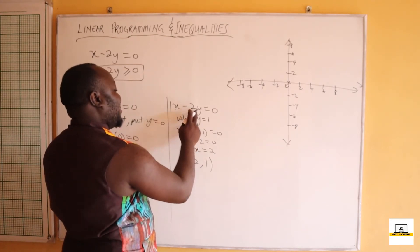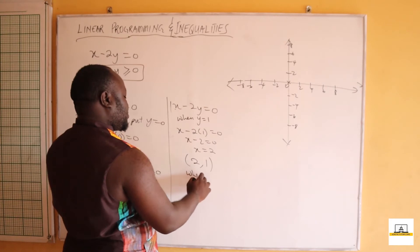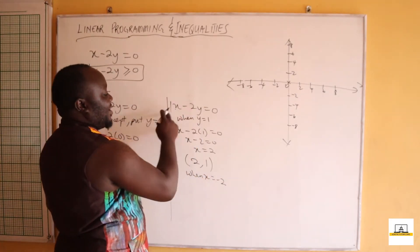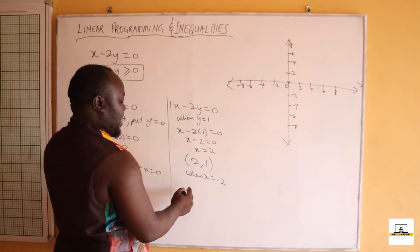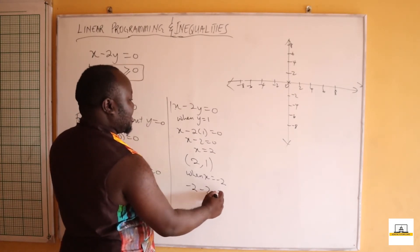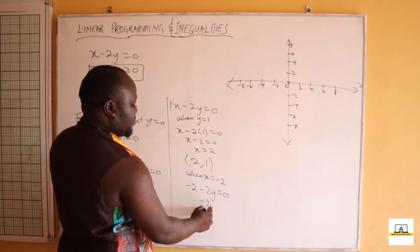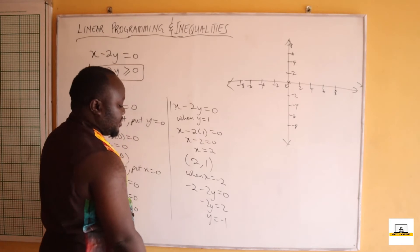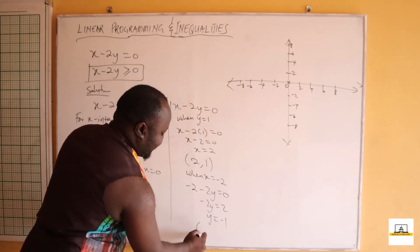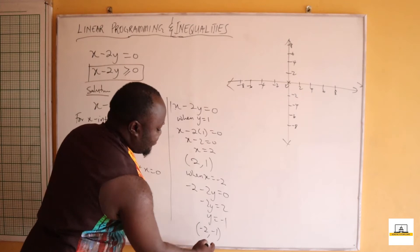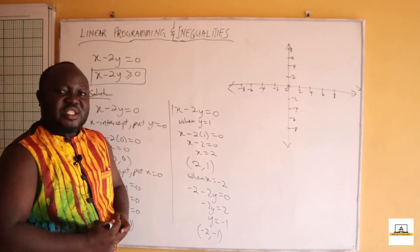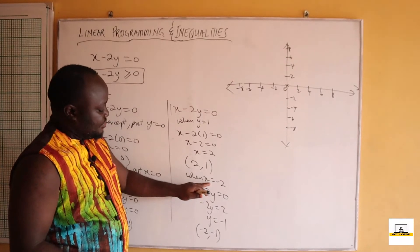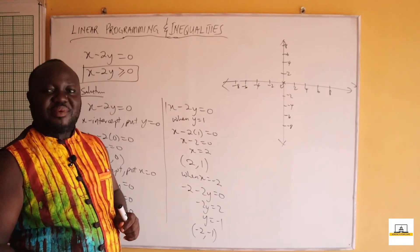Alternatively, assign the coefficient of y to x. Let x equal negative 2. Then negative 2 minus 2y equals zero, so minus 2y equals 2, giving y equals negative 1. This gives us the point (-2, -1). Remember to write the x-coordinate before the y-coordinate.